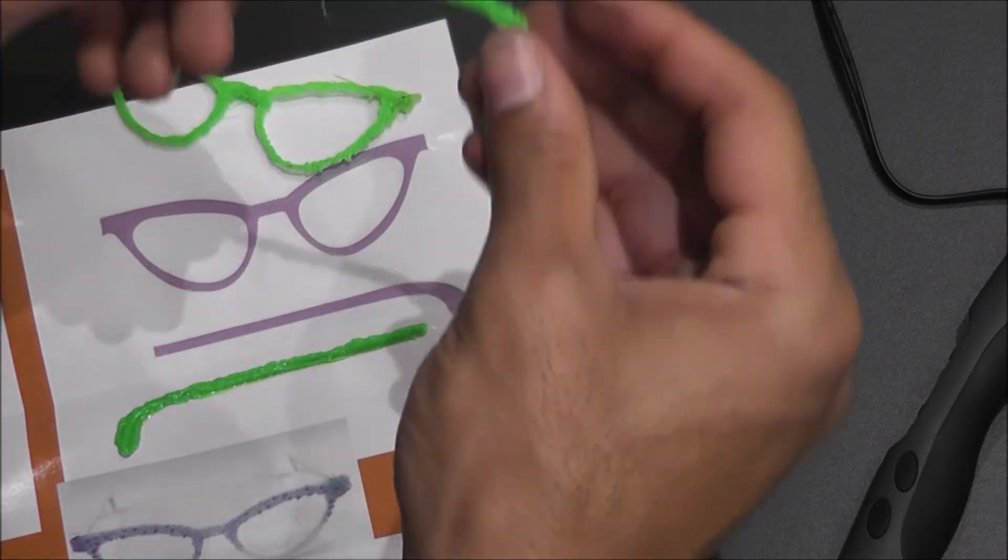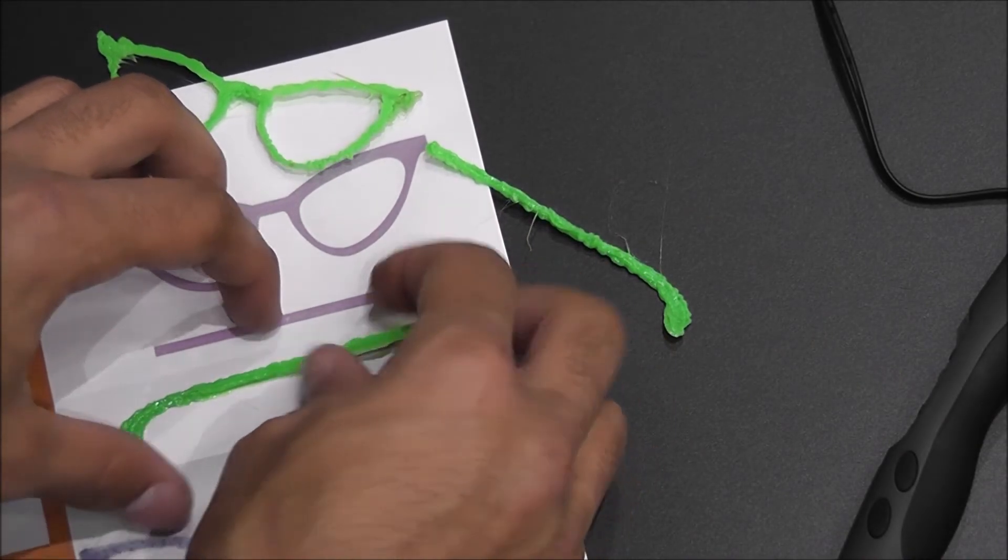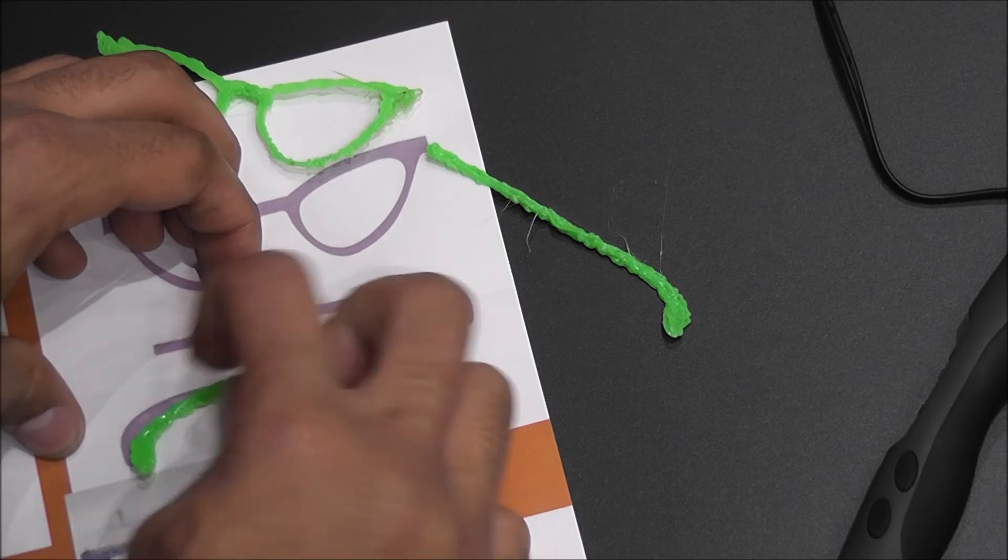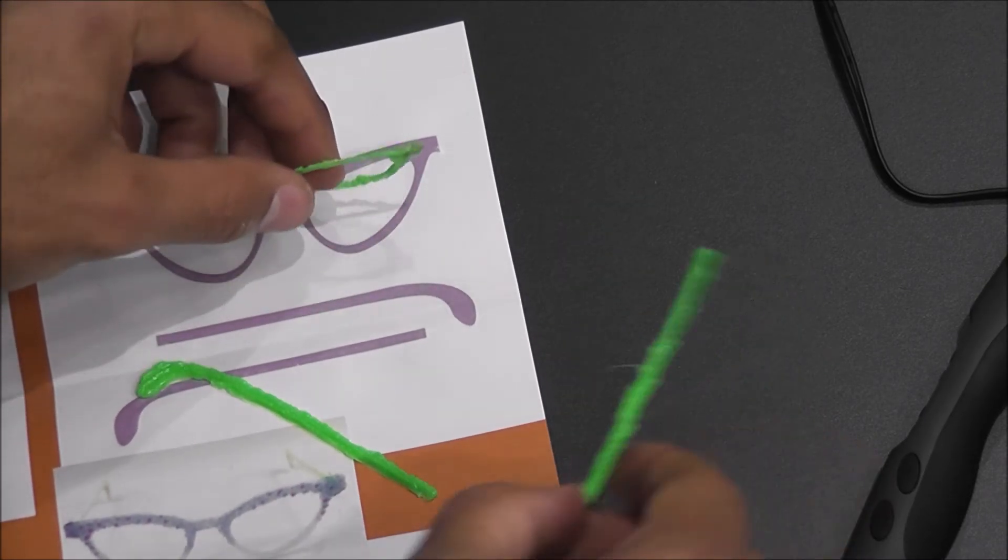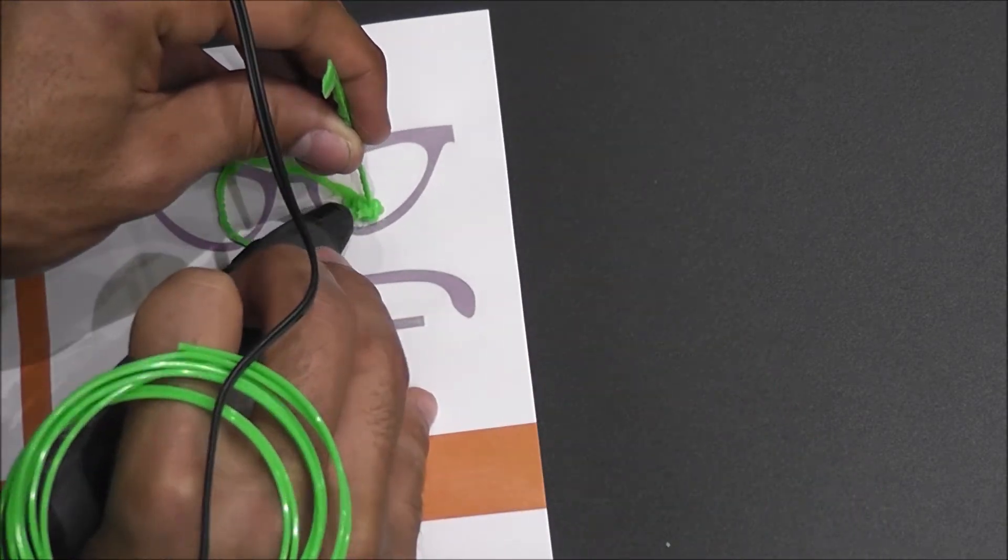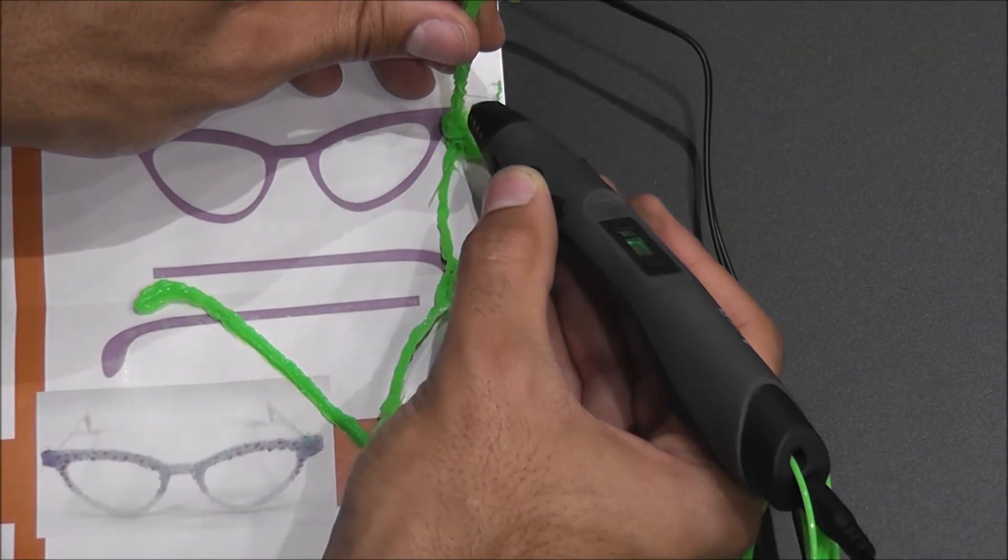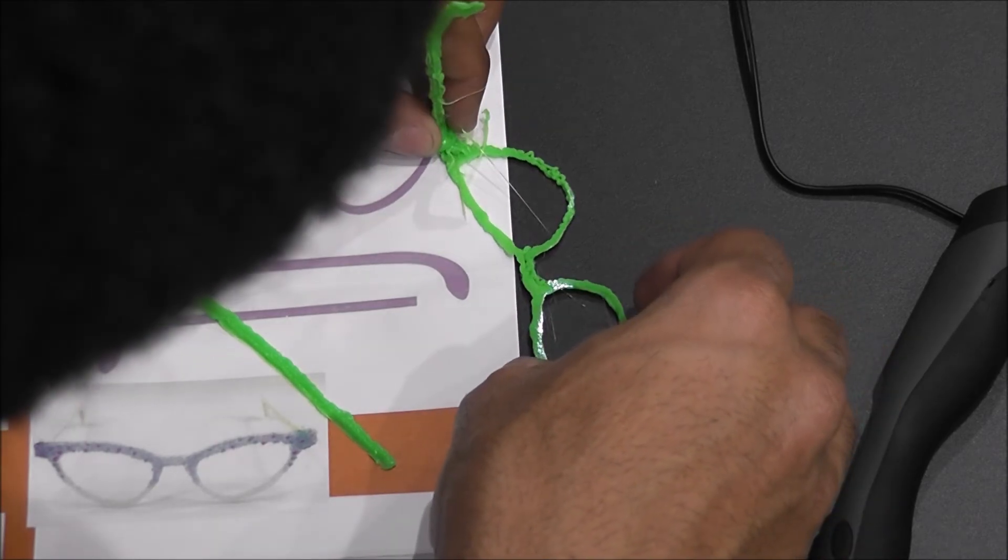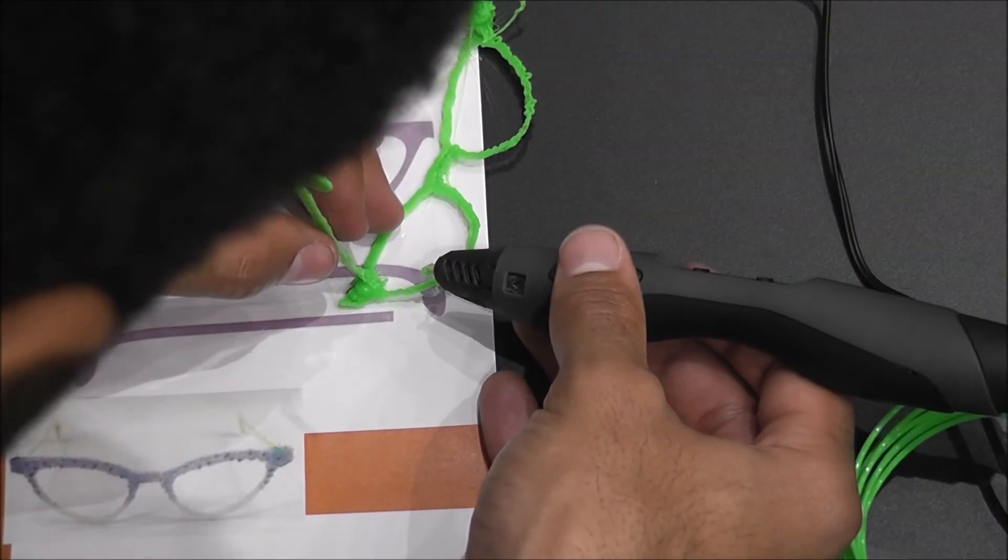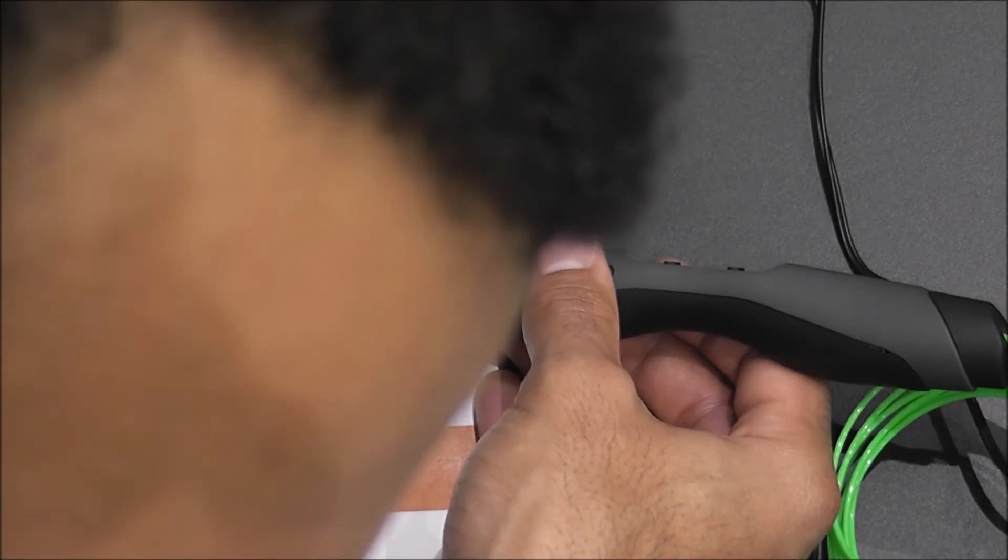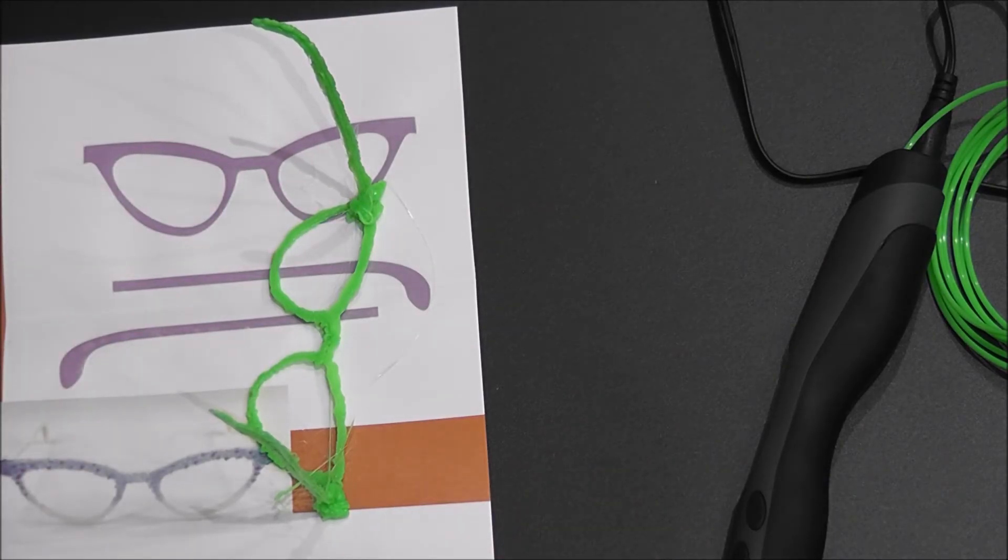They're a little bit messy. Quality's not so good, they're a little bit hairy, but it's okay. This one's still a bit warm I think. Now we've got to somehow glue them together. So the glasses are done, let's give them a try.